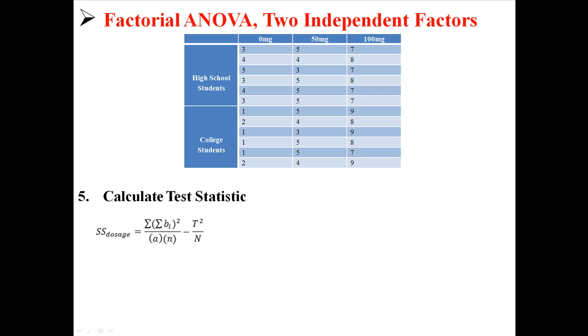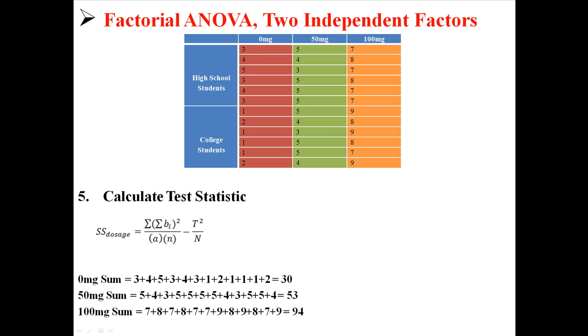Next we're going to do sum of squares dosage, which is a lot like sum of squares school except now the a and the b are switched around. So now we're going to split up the groups based on dosage. We have 0, 50, and 100, so we have three sums: 30, 53, and 94. So now those are squared and put on the top of the equation. Everything else is mostly the same. t is still the same, the capital N is still the same, lowercase n is still the same, and a is 2 because we have two a groups. So we put that in there and we find a sum of squares dosage of 175.17.